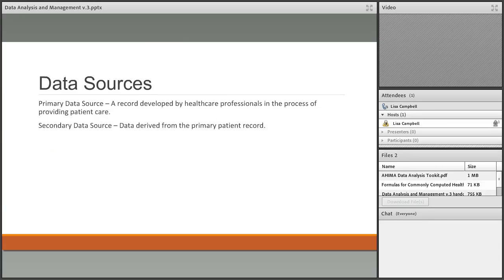Primary data sources are the medical records themselves — where information is recorded at or near the time of the event. Secondary data sources take data from primary sources and enter it into another place, such as indices and registries. Secondary data is derived from primary data.